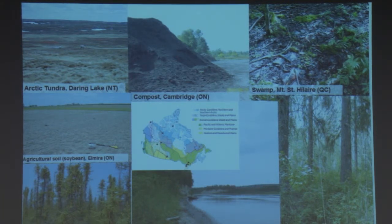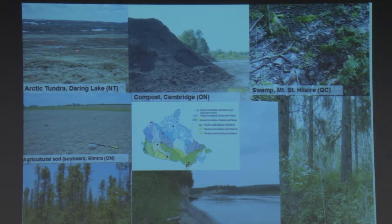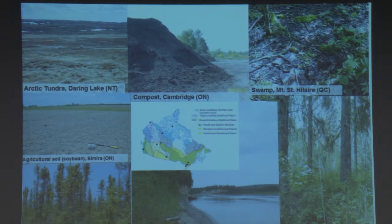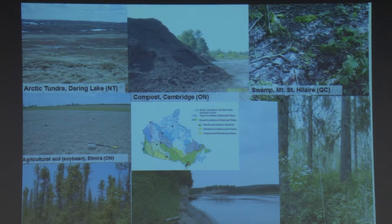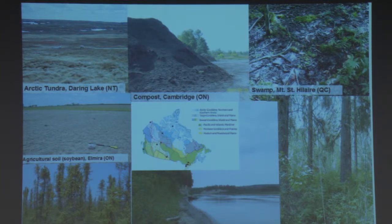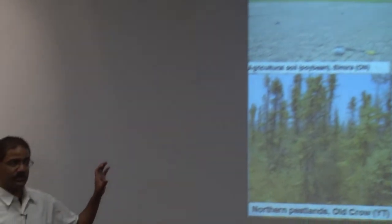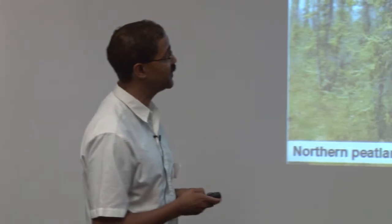Here are some of the environments where we get samples — representative Canadian soils. We've got Arctic tundra, compost in Cambridge, municipal compost, swamps, lots of agricultural soils, and even oil sands — I found out it's not called tar sands. These different communities have different genetic structures, different organisms, and different enzymes carrying out different biological processes. Community involvement was really important here; researchers who spent time in these environments quickly sent us samples we asked for.